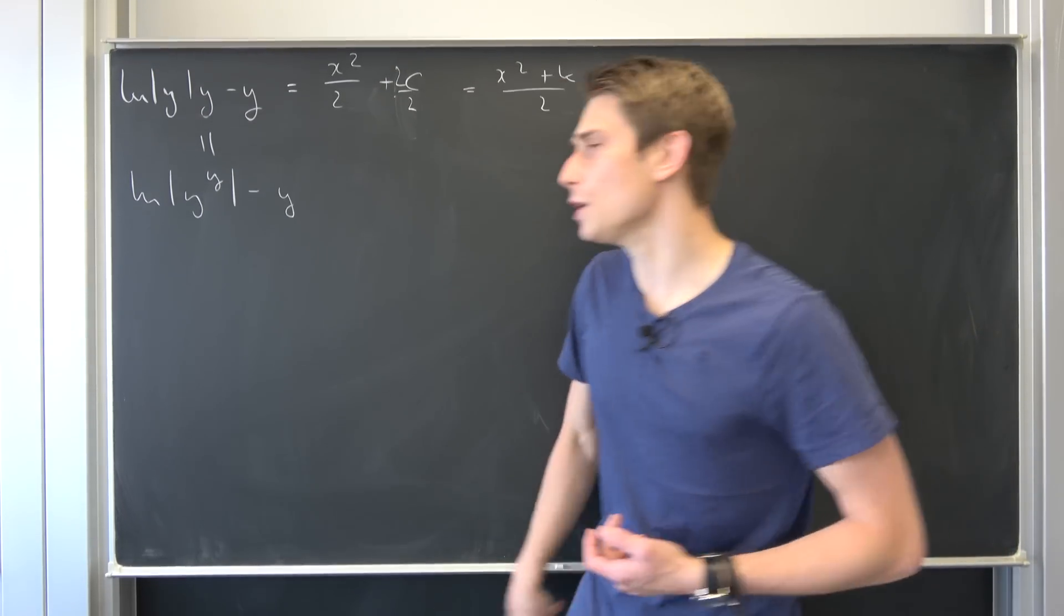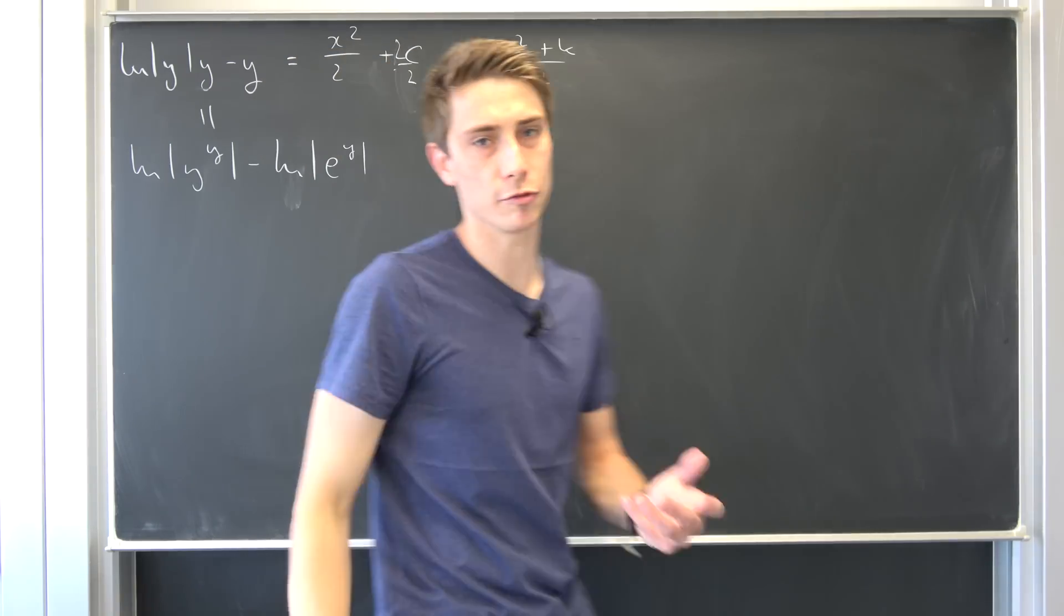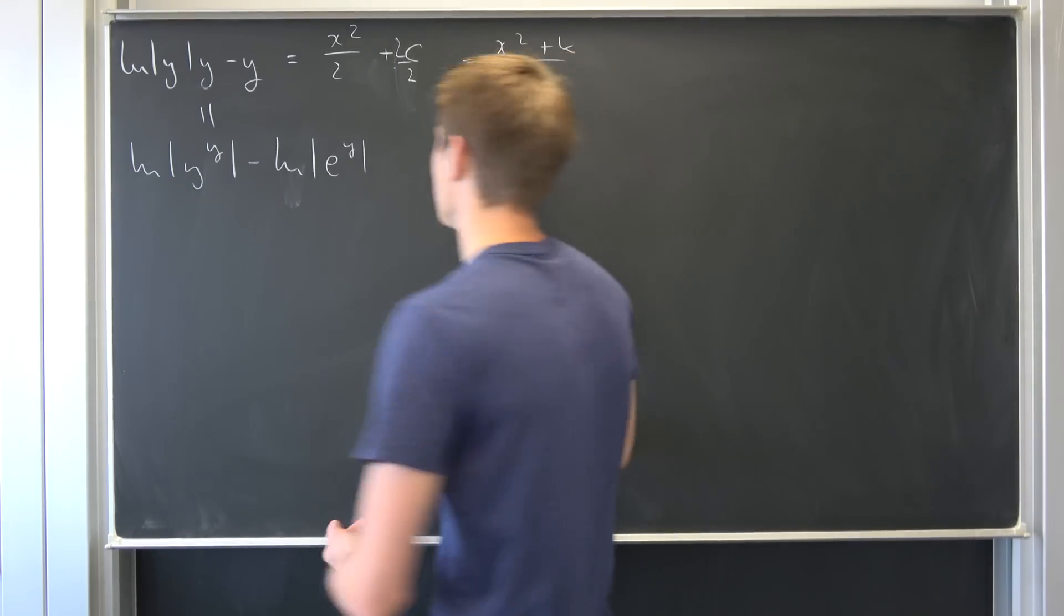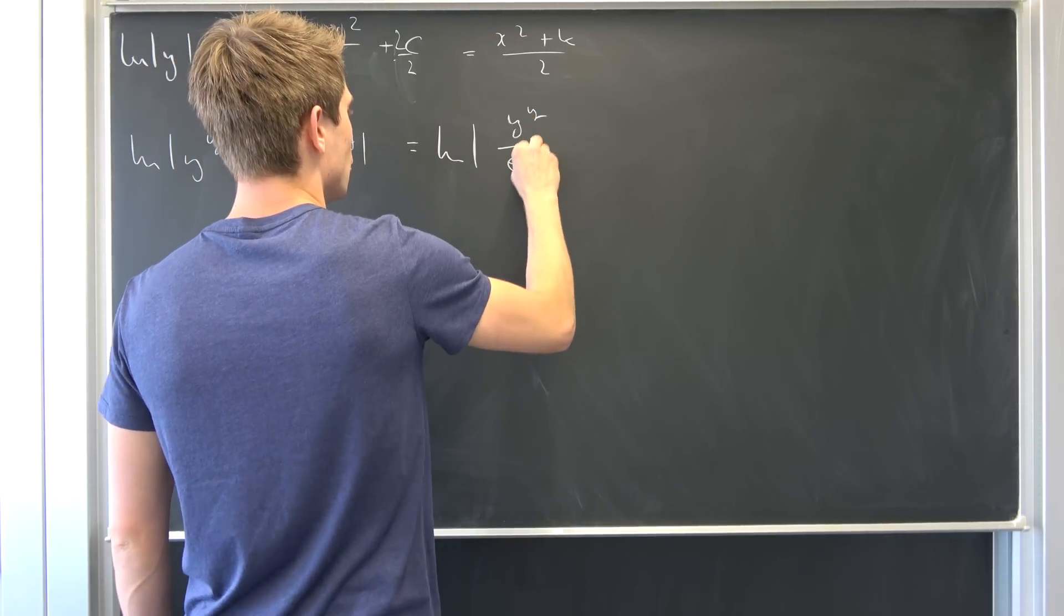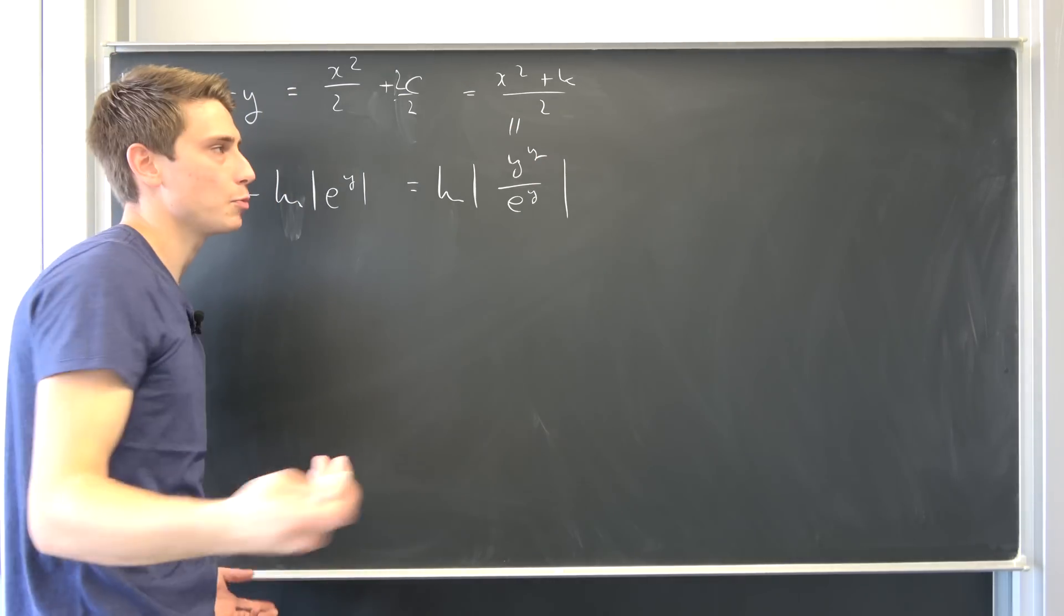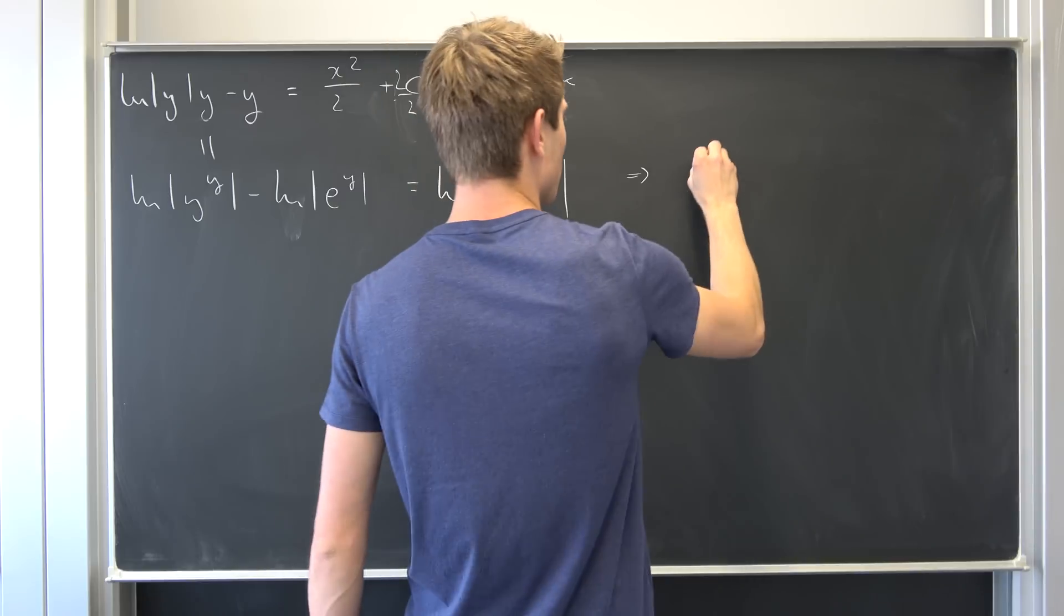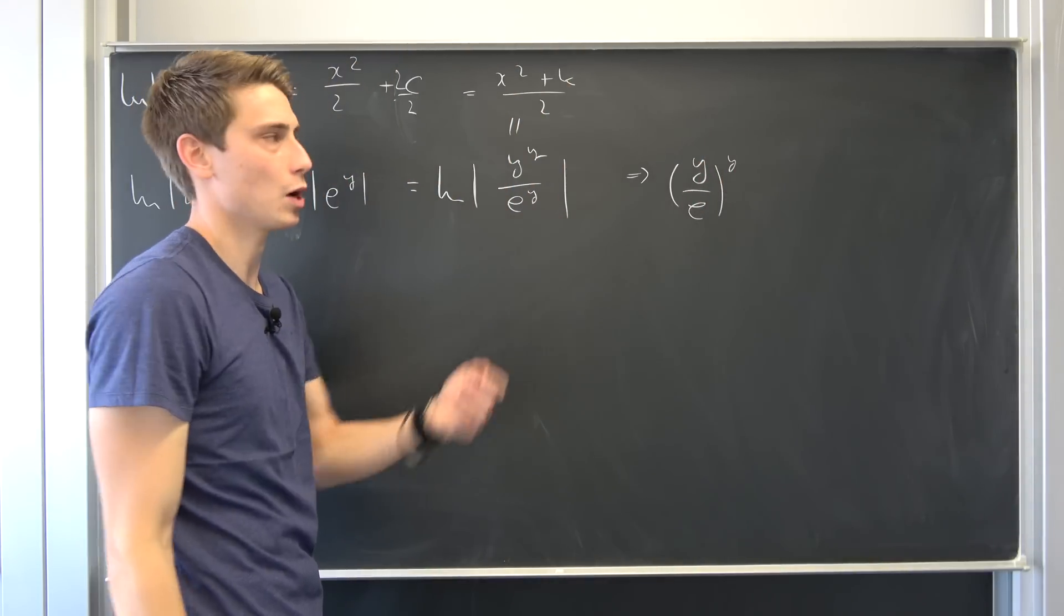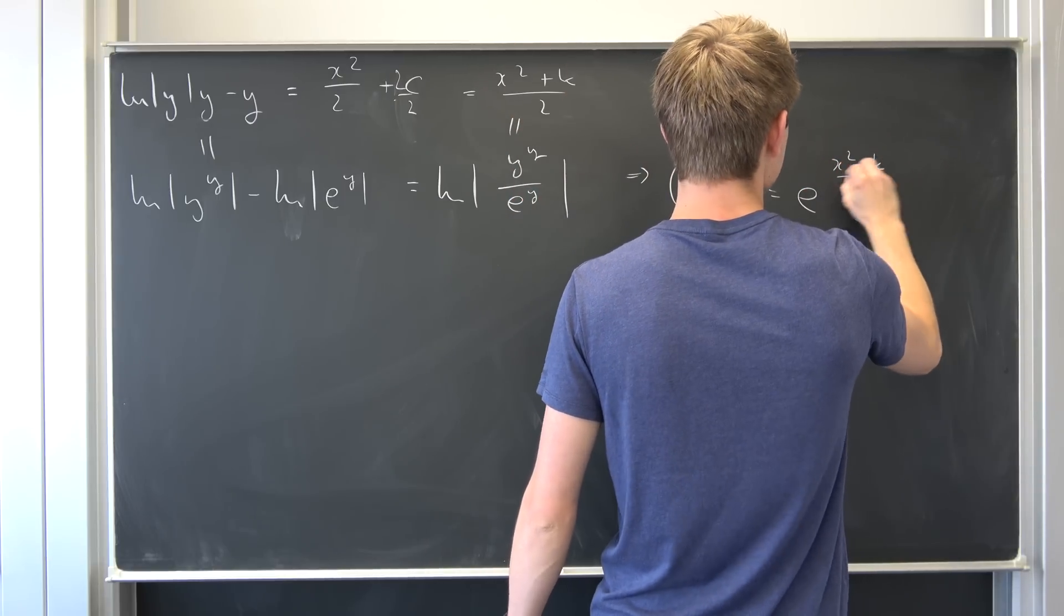So what is y exactly? y is nothing but the natural log of e to the y. I hope you agree with me that we can rewrite it like that. And now we can use this natural log property to turn this into the natural log of y to the y over e to the y. Maybe this looks a little bit better and just like I said before we can exponentiate both sides now using the exponential function. So on the one hand we end up with y to the y over e to the y. So just bringing this to the y to the outside, being equal to e to the x squared plus k over 2.